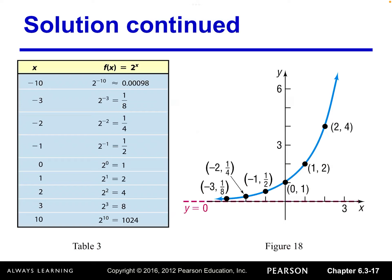Based on the growth factor — how fast it's growing — the shape will be different. As the base number gets bigger, the curve becomes more close to the y-axis. When the growth factor is greater than 2, the curve is more and more close to the y-axis.